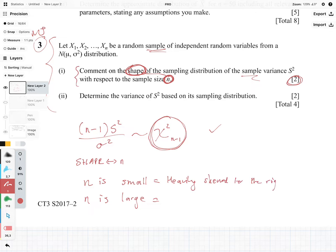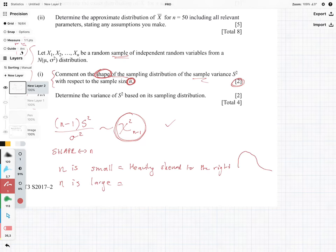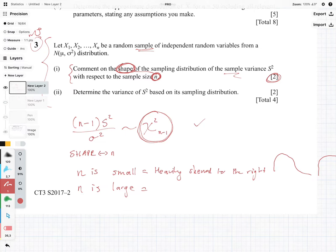Remember, we're going to get a shape almost that looks like that. I did not draw that very nicely. Something like that. But when we know that n is large, we know that chi-squared with k degrees of freedom is approximately distributed normally with k and 2k when k is large.